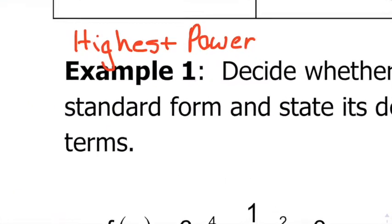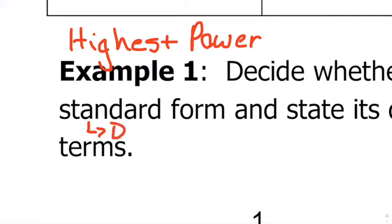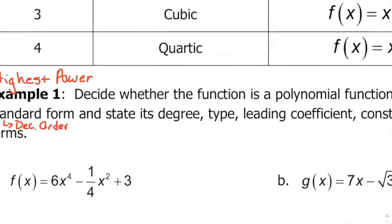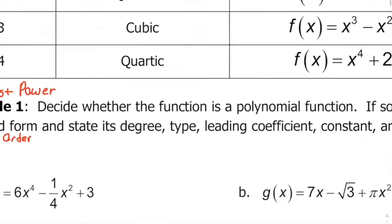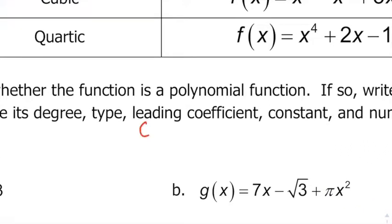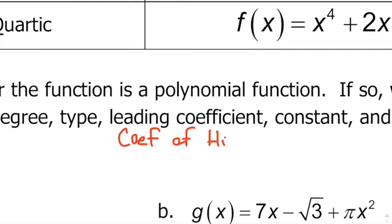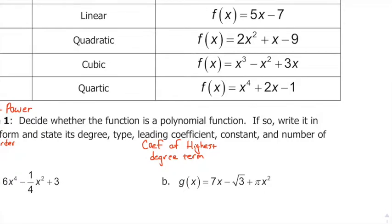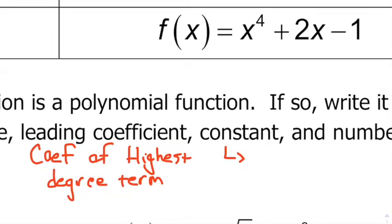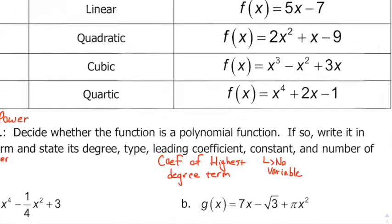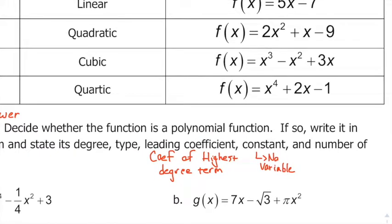Standard form — you just want to rewrite these in descending order. The degree is the highest power. The type is that middle column. The leading coefficient is the coefficient of the highest degree term. The constant is the term that doesn't have a variable. The number of terms is just how many individual pieces there are.